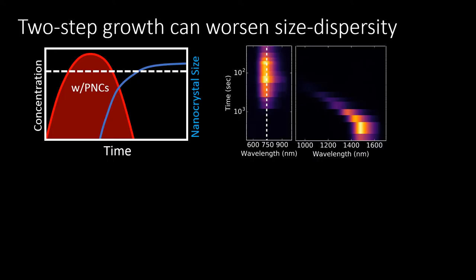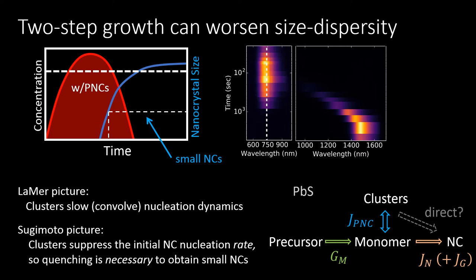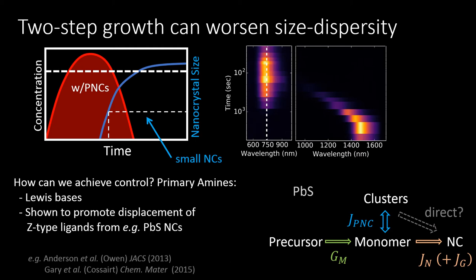Representing our observations schematically, we observe a long pre-nucleation cluster reaction lifetime leading to delayed nucleation and large nanocrystals at completion. This hampers the synthesis of small nanocrystals, as a reaction would have to be quenched when all the nucleation and growth dynamics are convolved. Further, the presence of clusters competes with nanocrystal nucleation, suppressing Jn to the benefit of Jpnc. Therefore, we need a way to control Jpnc and push the equilibrium back to monomers available for nucleation.